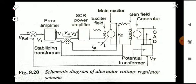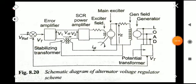This is the schematic diagram of the alternator voltage regulator scheme. Here you can see the generator, and we are controlling the voltage output of the generator by controlling the field. We are taking a voltage feedback using a potential transformer, and this feedback — the terminal voltage of the generator — is compared with the reference voltage.